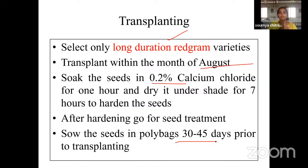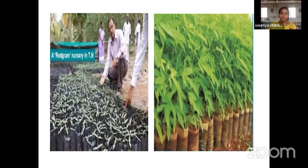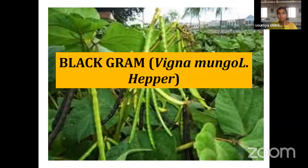According to 2021 data, Rajasthan leads in area and production of red gram followed by Madhya Pradesh. However, productivity of red gram is highest in Punjab at around 800 kg per hectare, whereas other states show very low productivity. This was about red gram — this picture shows a red gram nursery, and after 45 days it can be transplanted into the main field.